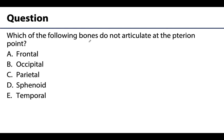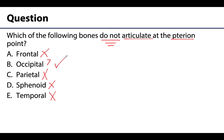Looking at the stem — which does not articulate at pterion? Frontal: yes, it does. Occipital: not so sure. Parietal: yes, for sure. Sphenoid: yes. Temporal: yes. So these four — frontal, parietal, sphenoid, and temporal — all articulate at pterion. The occipital is going to be too posterior and will not be articulating at pterion, making it the correct answer. Thank you for your time and attention. Next we will move on to the muscles associated with the head. Have a great day.